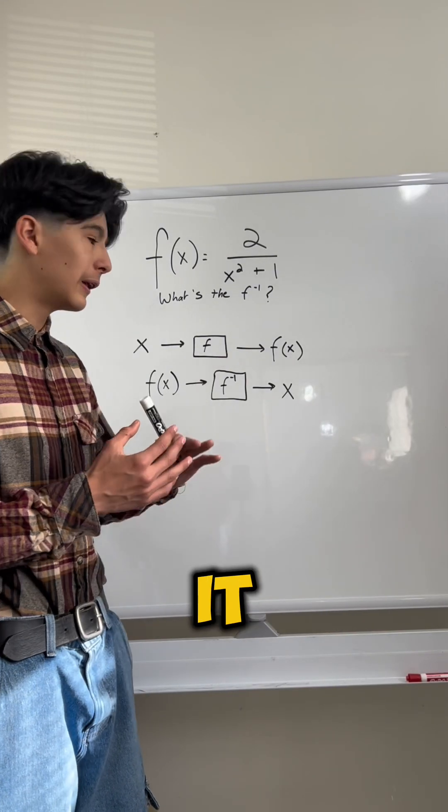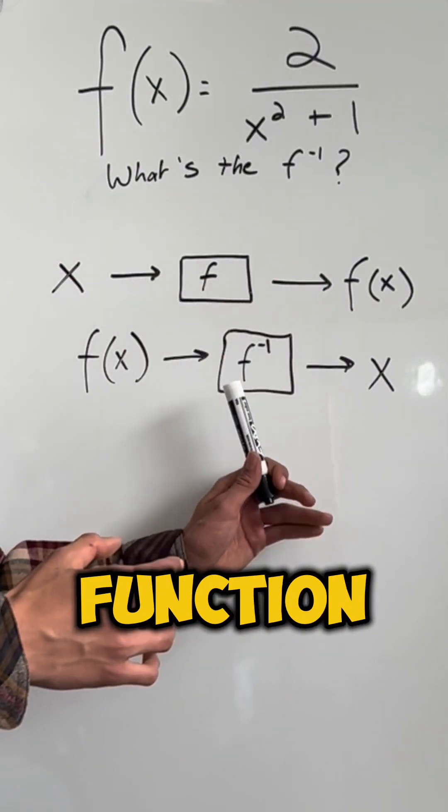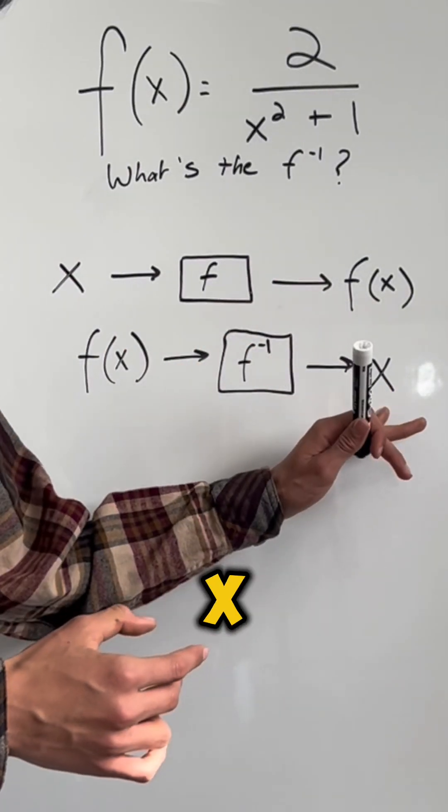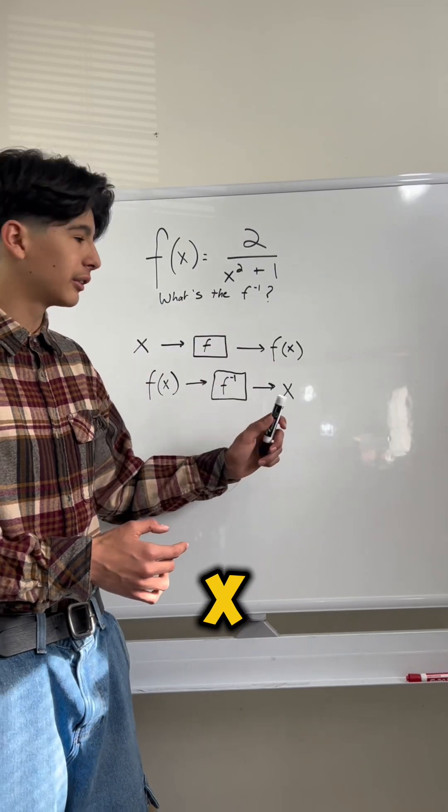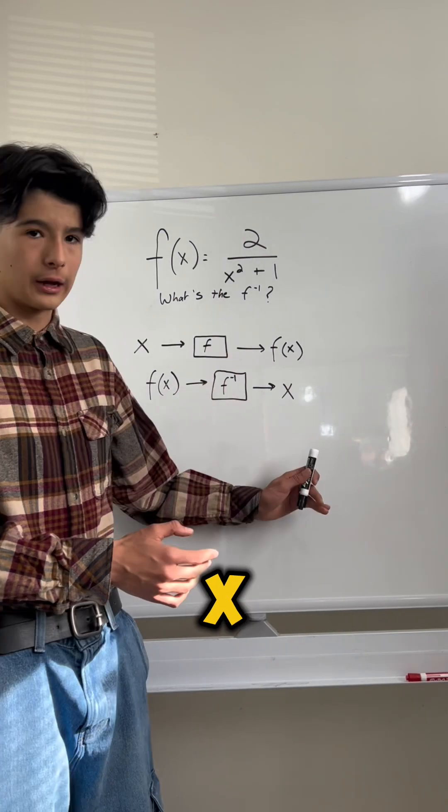But if you put f of x, which is the output from here, into the inverse function of this, then you will just get x. So, think of it as the regular function takes x to f of x, and the inverse function takes f of x to x.